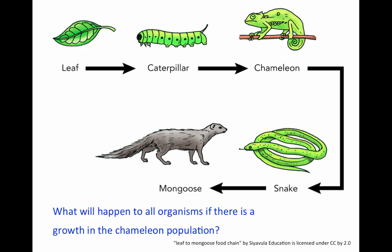Alright, let's go ahead and look at this one. What will happen to all organisms if there is a growth in the chameleon population? We know growth means to increase. So if the chameleon population were to increase, what would happen to all the other organisms? Please pause this video at this time.